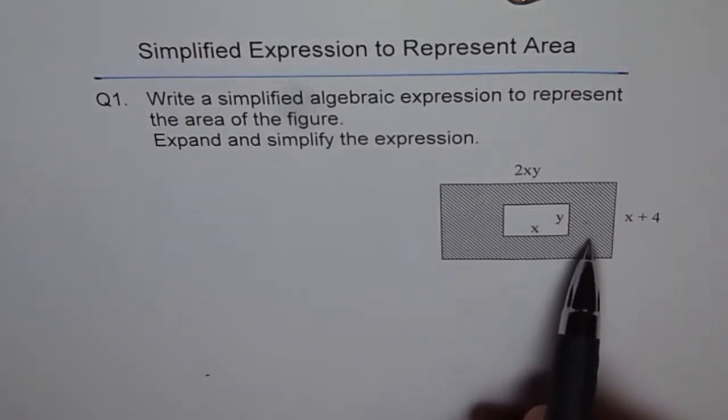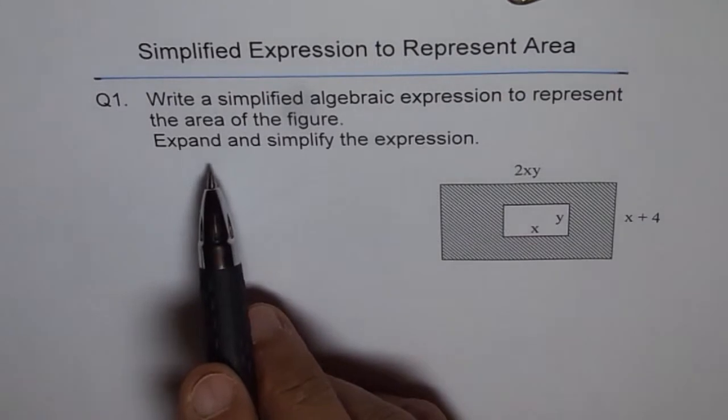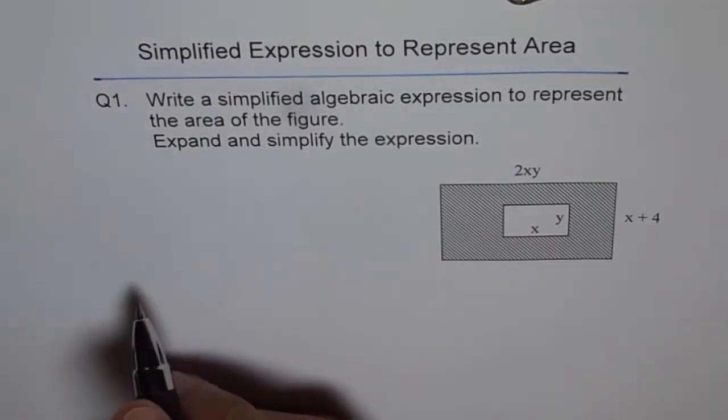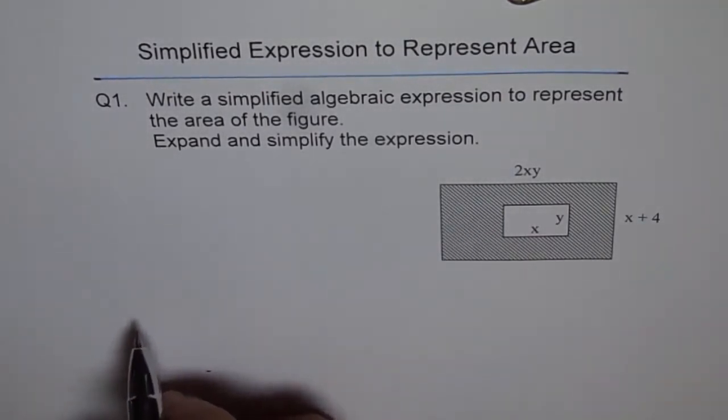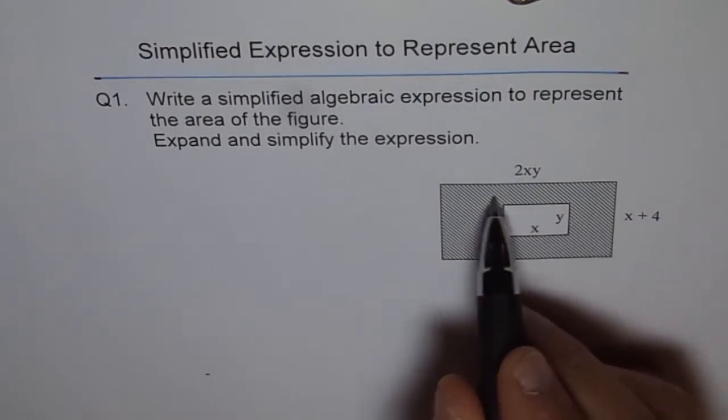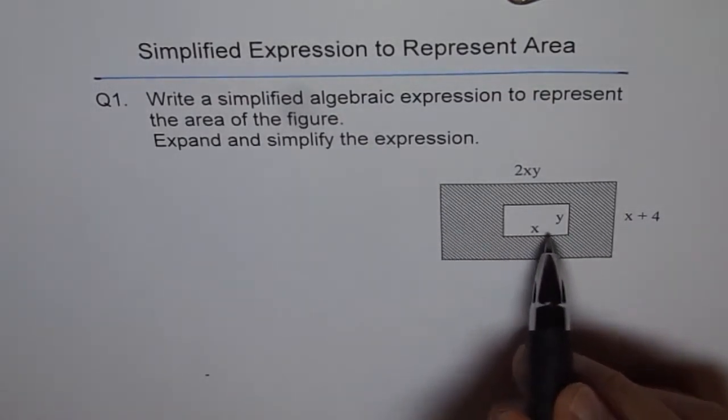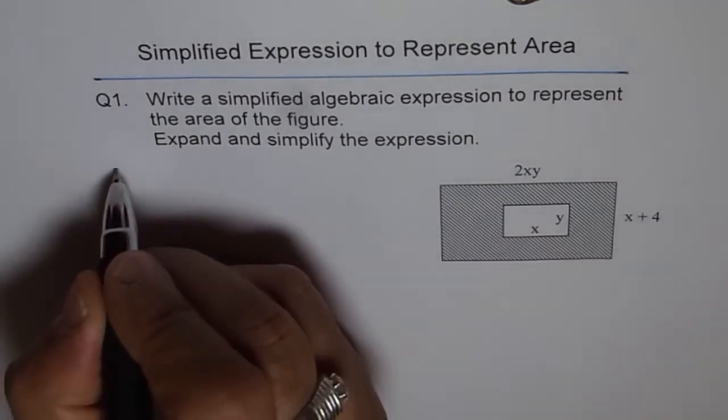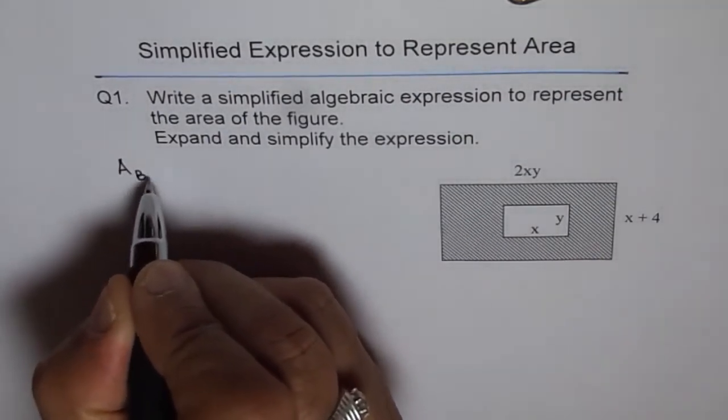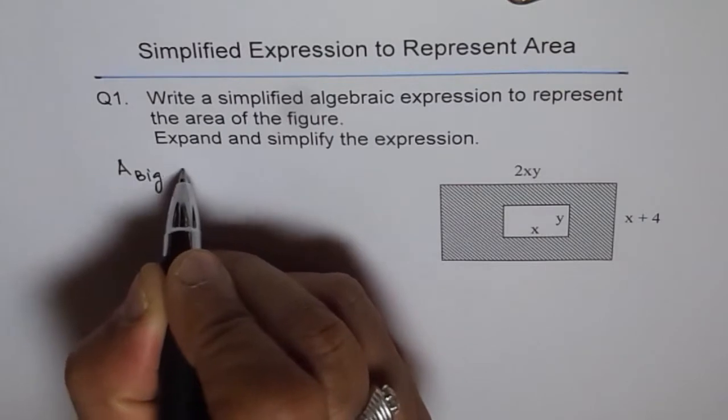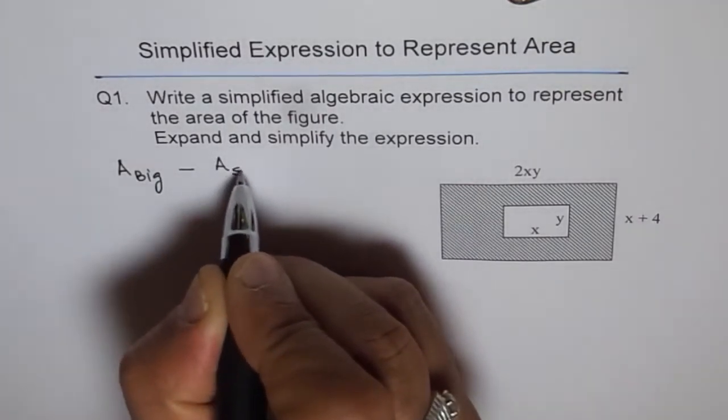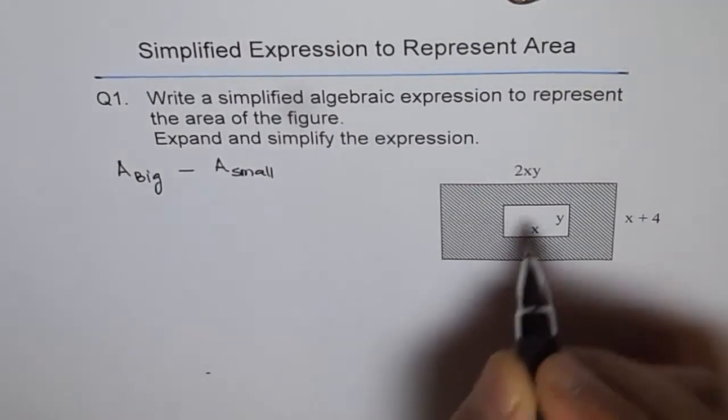The shaded portion in the figure - expand and simplify the expression. The way to do it is: the shaded area equals the area of the big rectangle minus the area of the small rectangle. That is the area of the shaded portion.